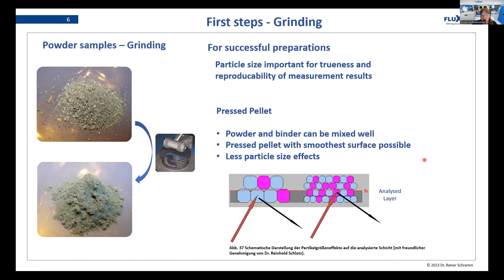The powder and binder for pressing the pellets can be mixed very well, and the pressed pellet will have the smoothest surface possible, which is very good for our measurement afterwards. We will also have less particle size effects. When using XRF, we have something called analysis depth — the fluorescence radiation coming out of the sample only comes from a certain depth. If you have quite big particles, you might analyze only one layer of particles that is not representative for the whole sample. The finer your powder is, the more representative it will be.